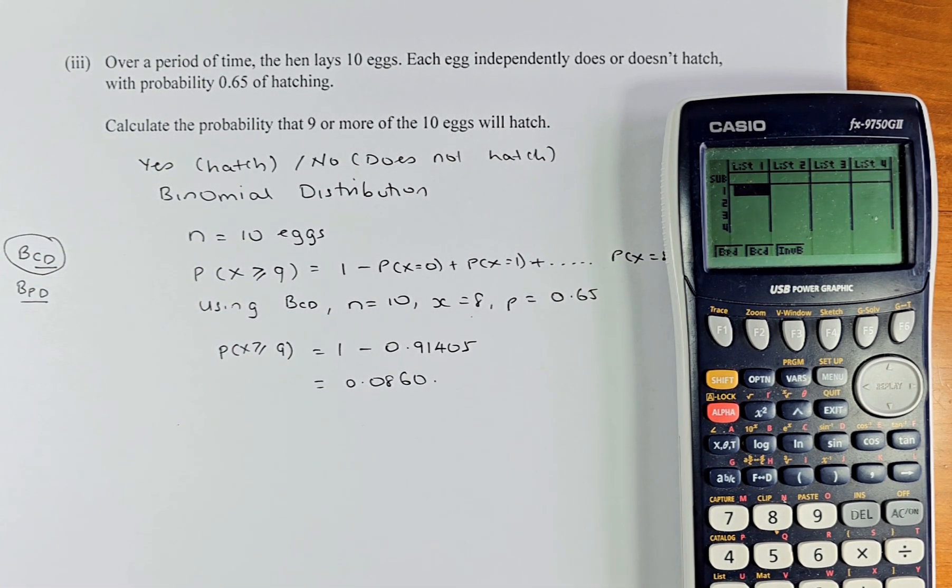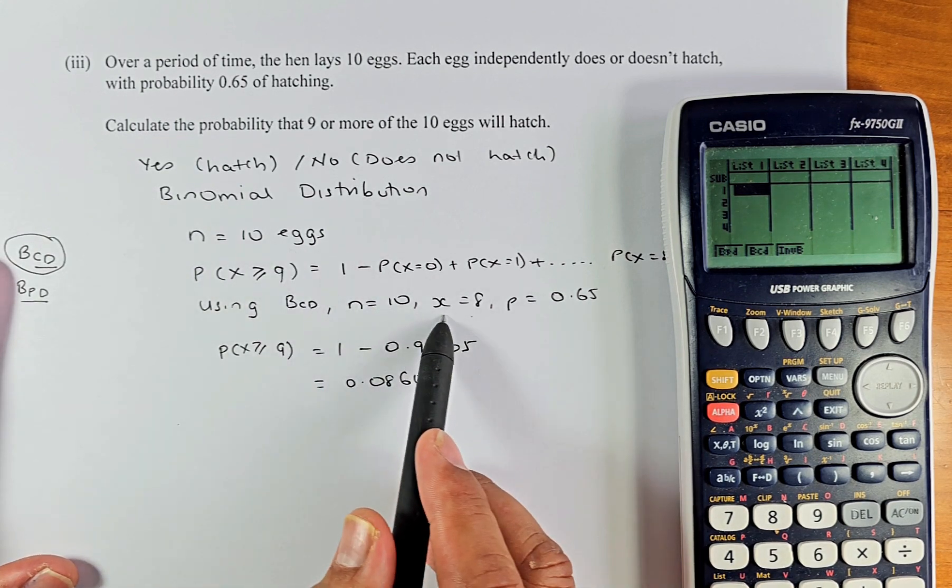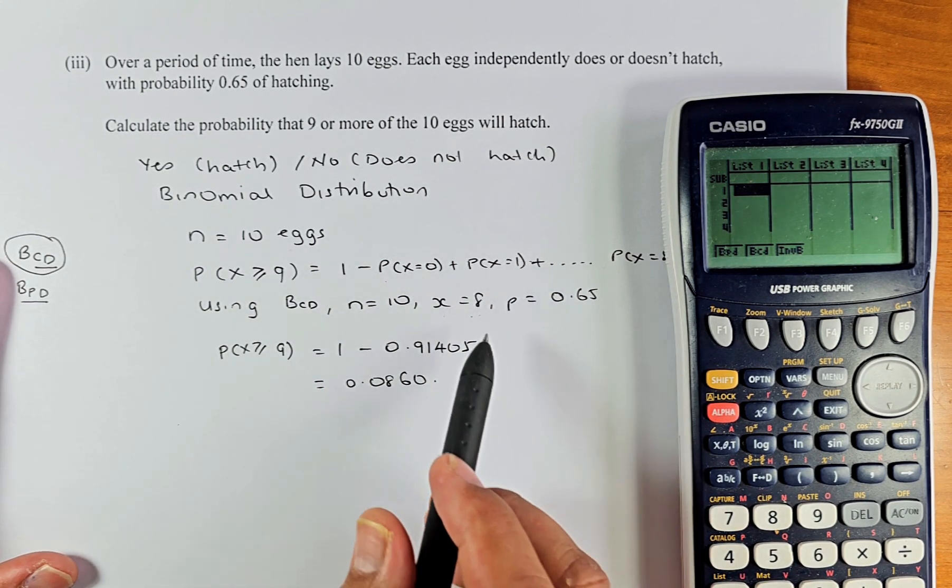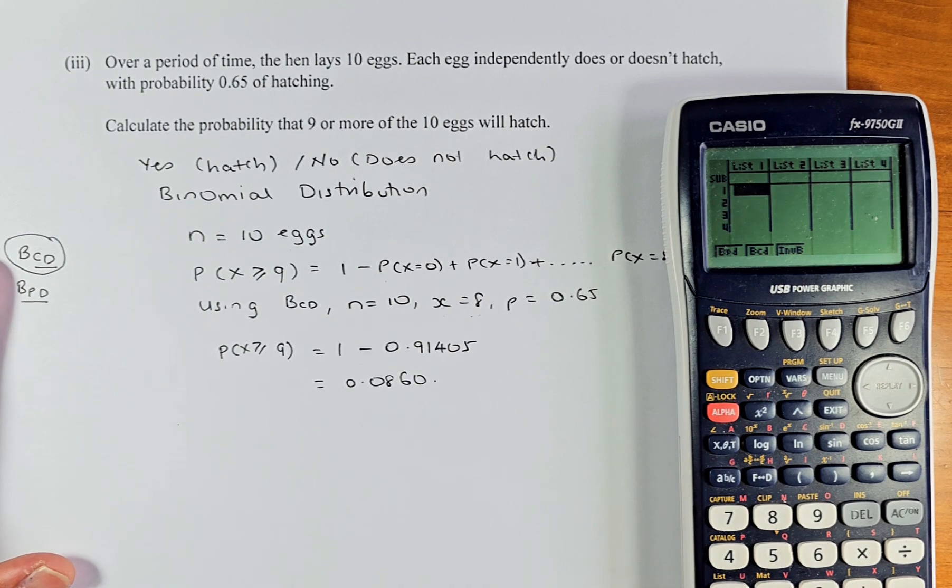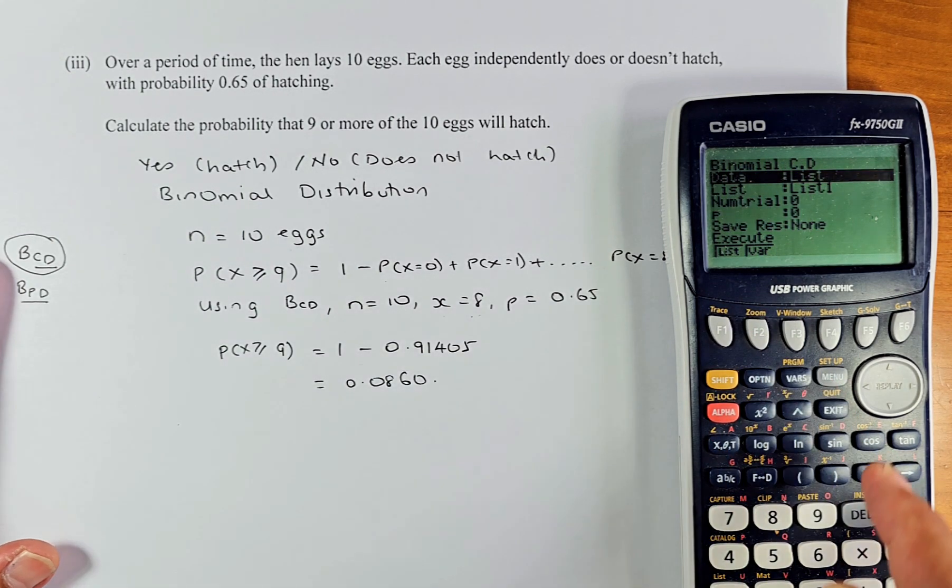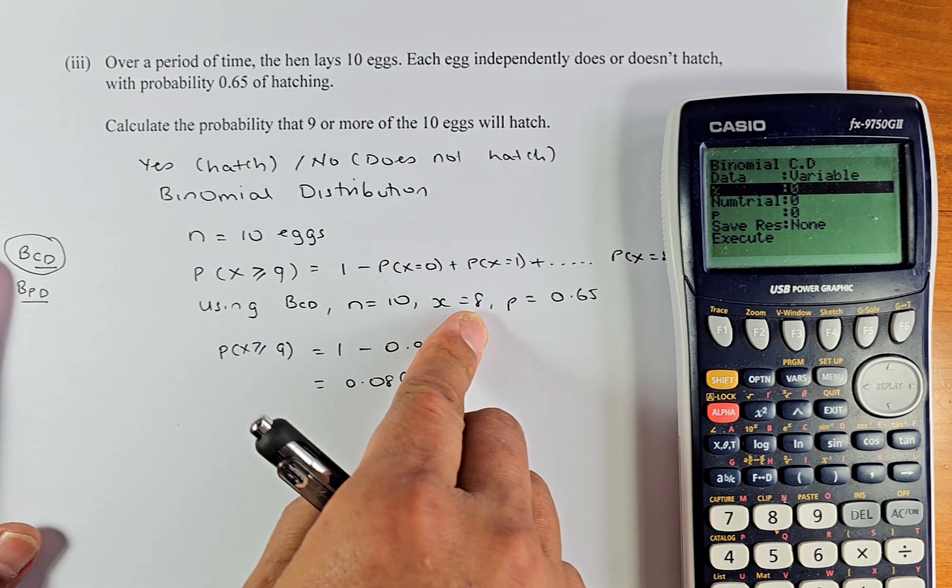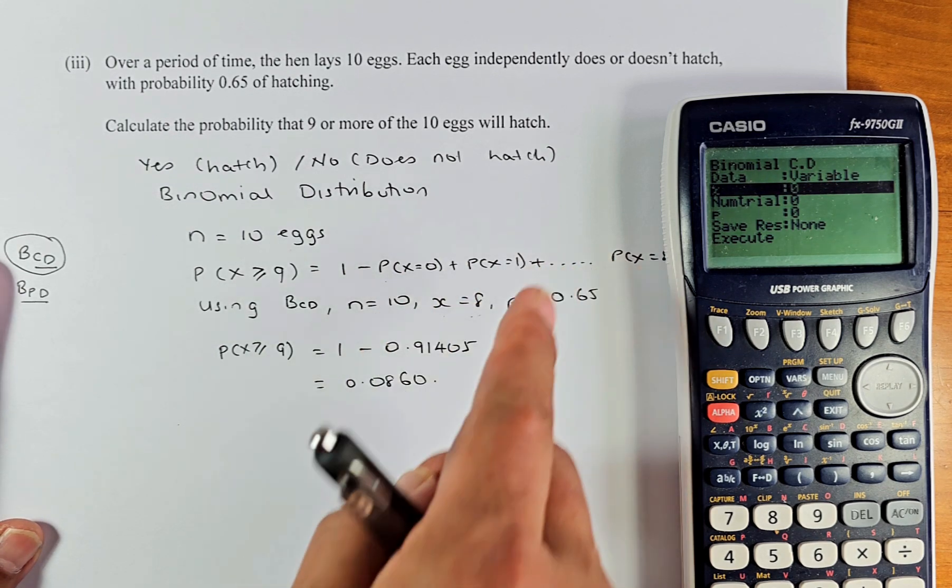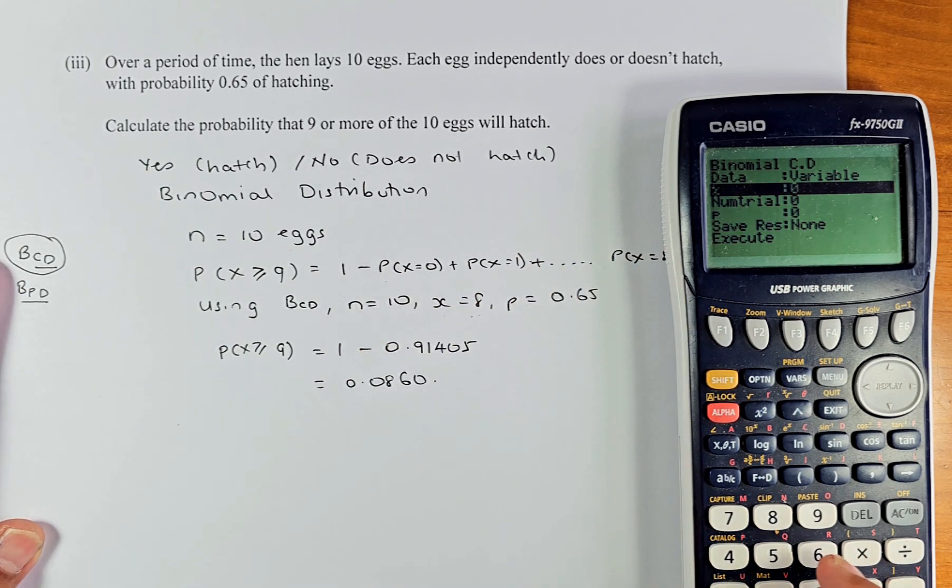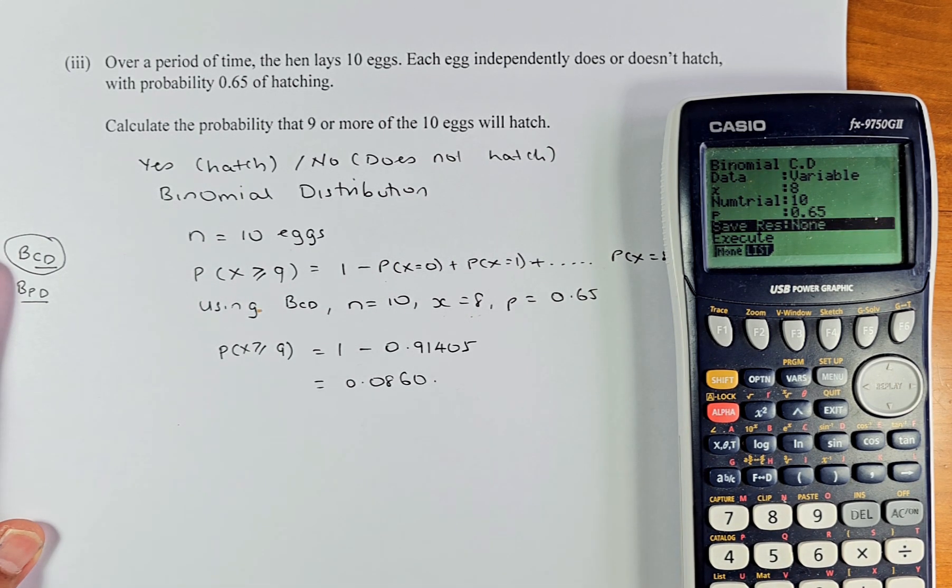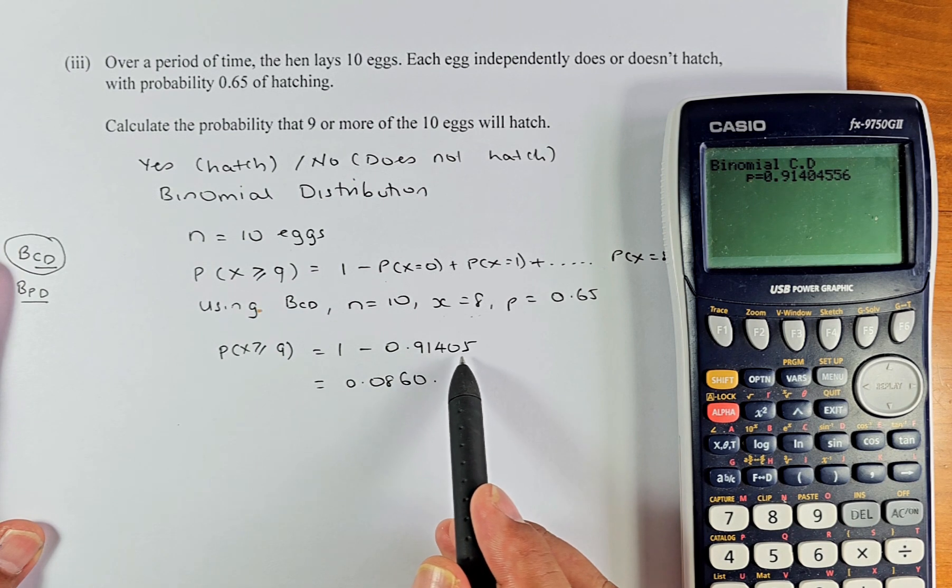Now we are going to put N equal to 10 because the number of eggs is 10. X equal to 8 because we are going to calculate from 0 to 8. And success is 0.65. So now we are going to do BCD, and then the first thing you do is going to do variable F2. If you put a list, you can't calculate. Now X is the number of trials, which is 8. No, X is the success, so 0 to 8. From 0 to 8, so the X is 8. Execute. Number of trials is N, which is 10. Execute. Success is 0.65. Execute. And then you execute one more time and the answer is 0.91405.